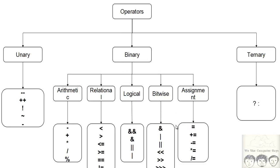Then you have the bitwise operators, which basically act on your variable bit by bit. We will have a separate video for that. Then you have the assignment operator, which we used in our previous lecture to assign variables certain values. There are also different types of assignment operators we will get into later, and ternary and unary operators will each have a separate video.